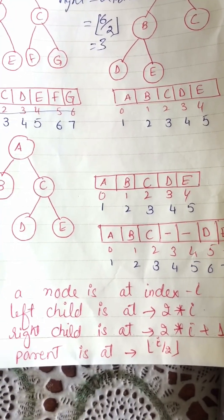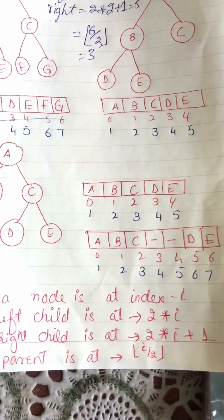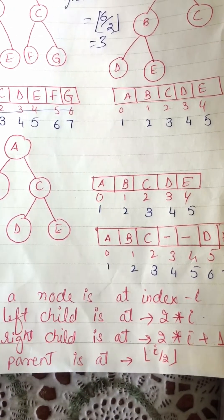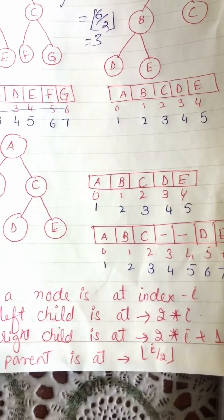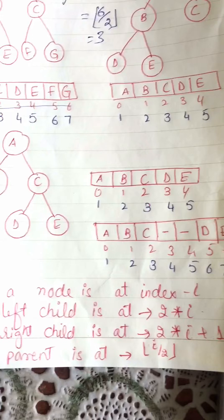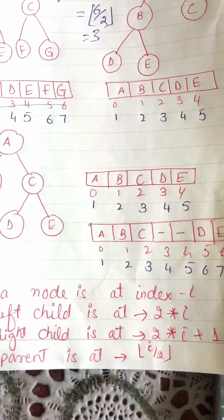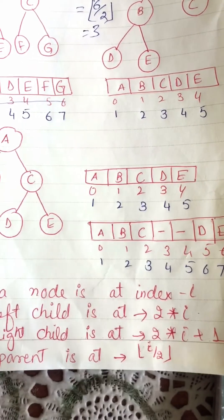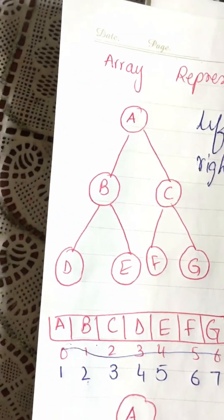The formulas tell us: if a node is at index i, its left child will be at 2i (2 multiplied by i), the right child will be at 2i+1 (2 multiplied by i, plus 1), and the parent will be at floor(i/2). The floor function means that if you have 3.5, 3.7, or 3.2, we take only the integer part — so 3.7 rounds down to 3, not up to 4.